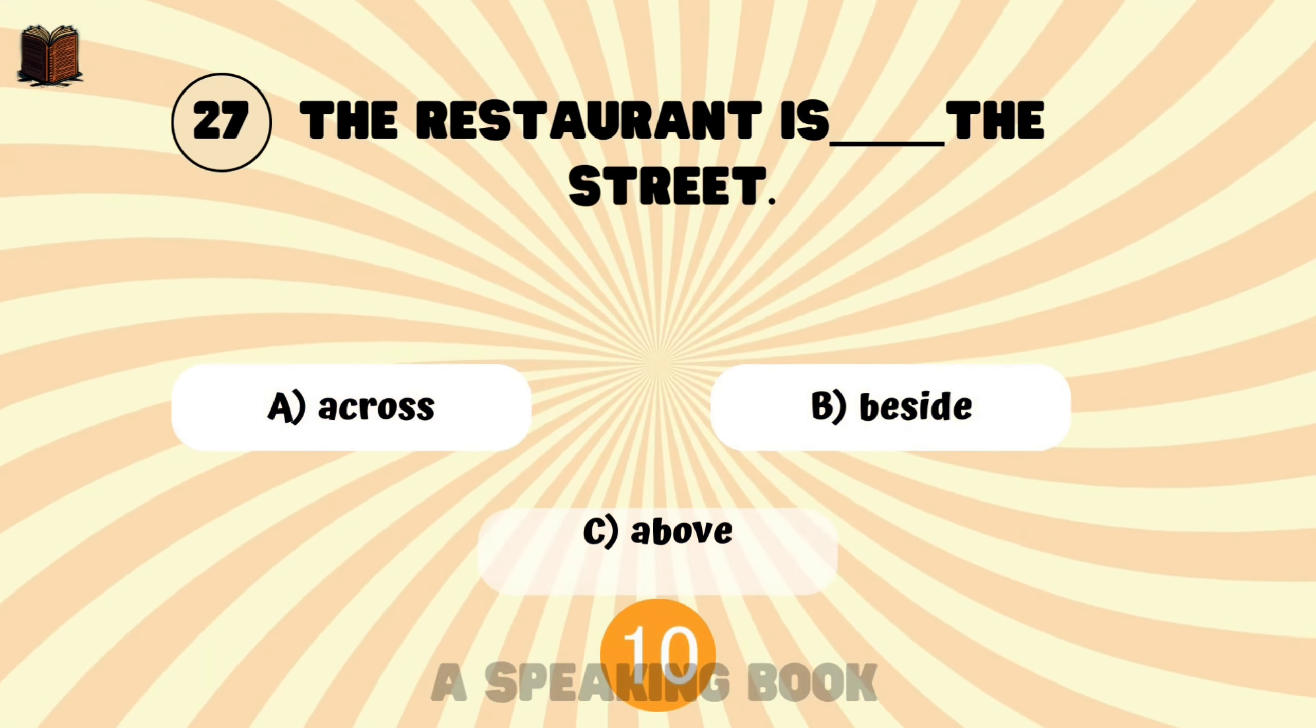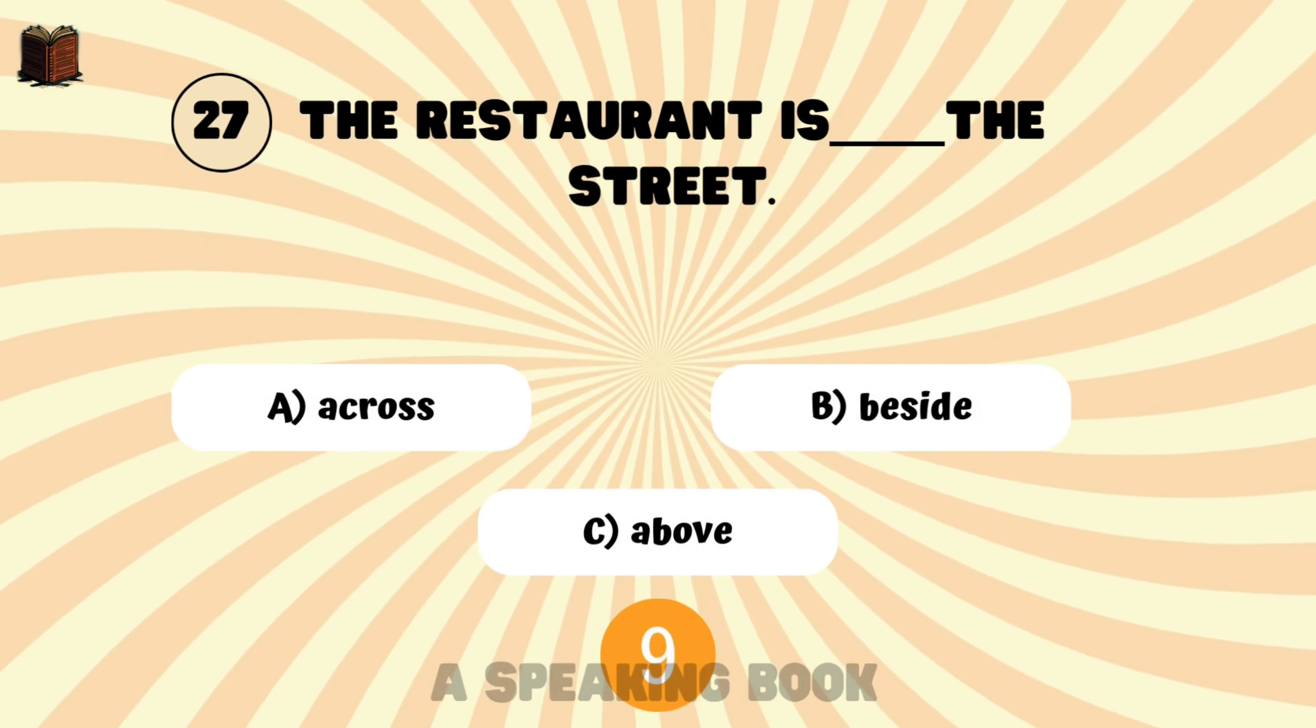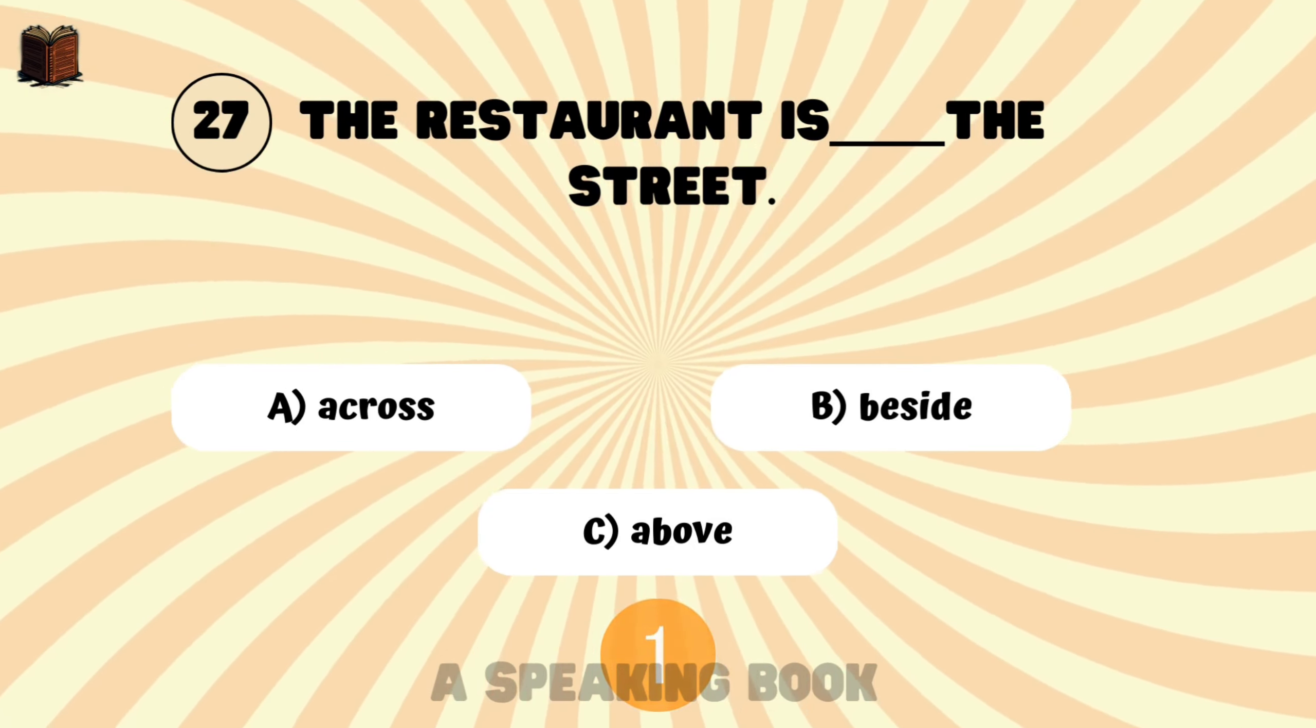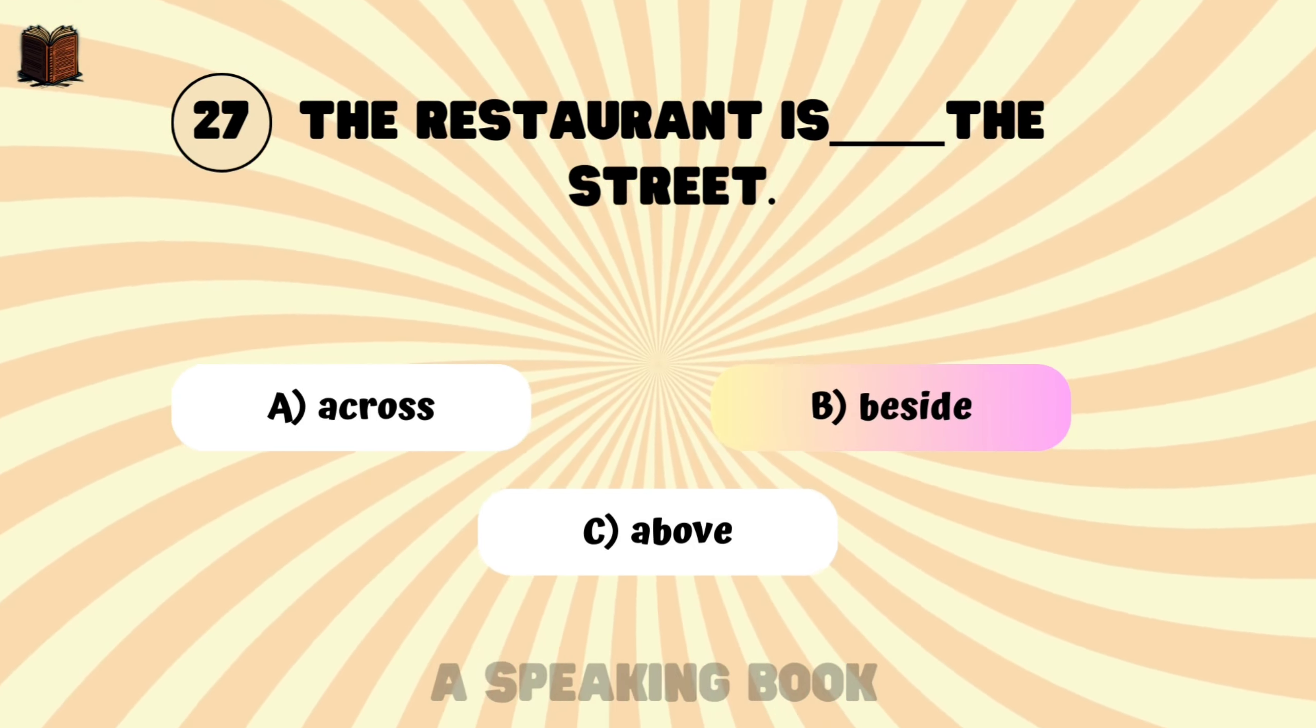The restaurant is blank the street. Options: A, across. B, beside. C, above. The restaurant is blank the street.